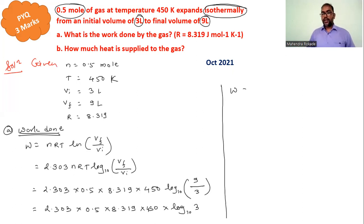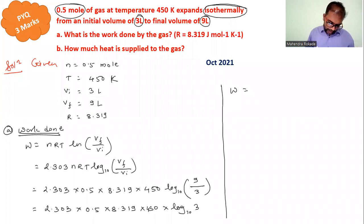Now we have to solve this and whatever we are getting is the work done in joule. The answer is 3290.4 joule, so this is work done by gas and it is positive by sign convention.